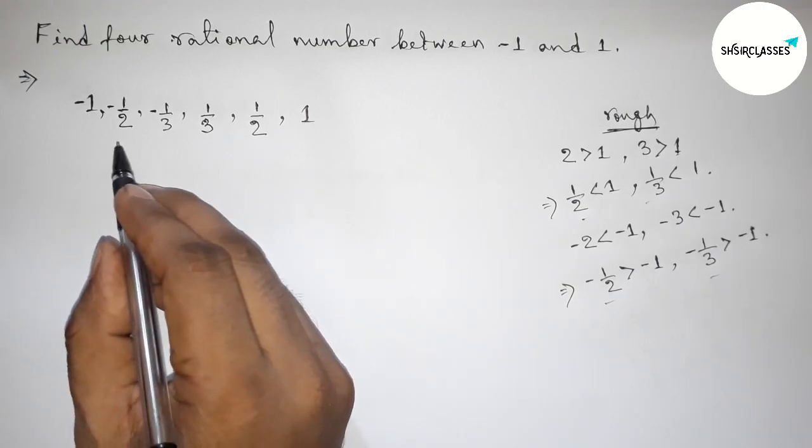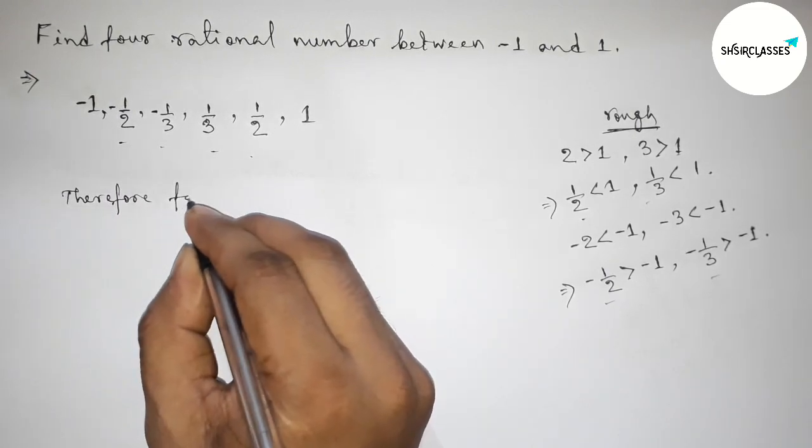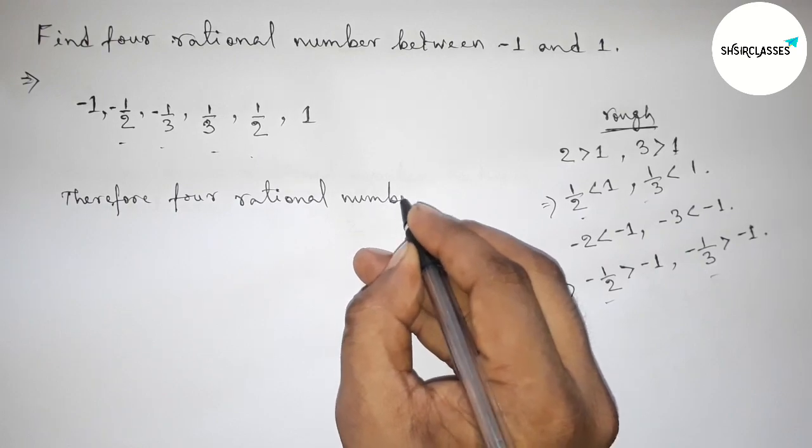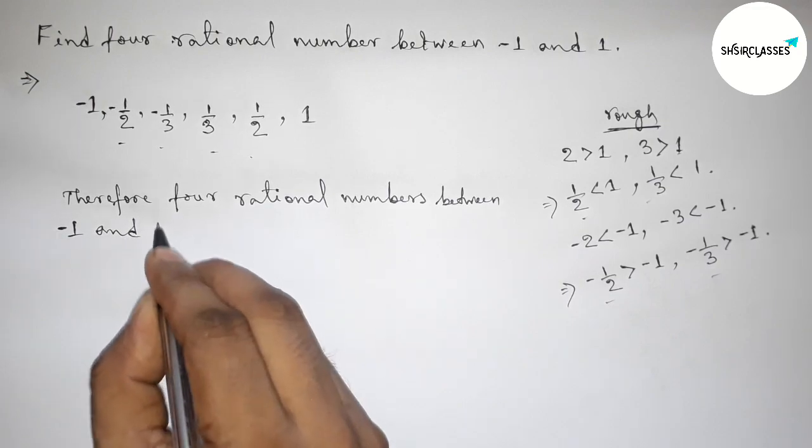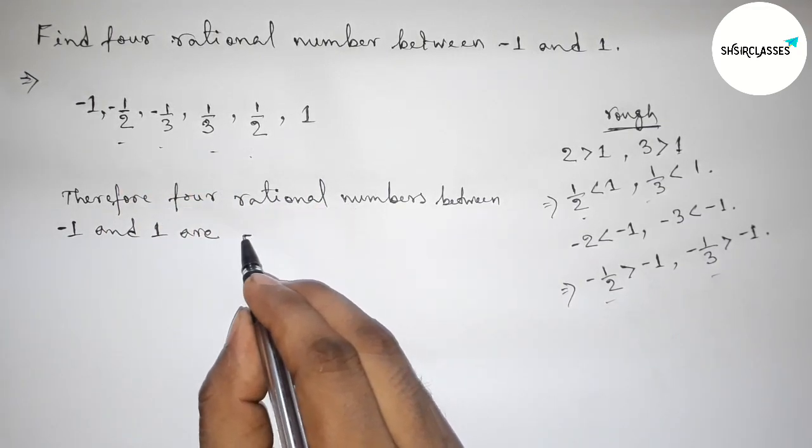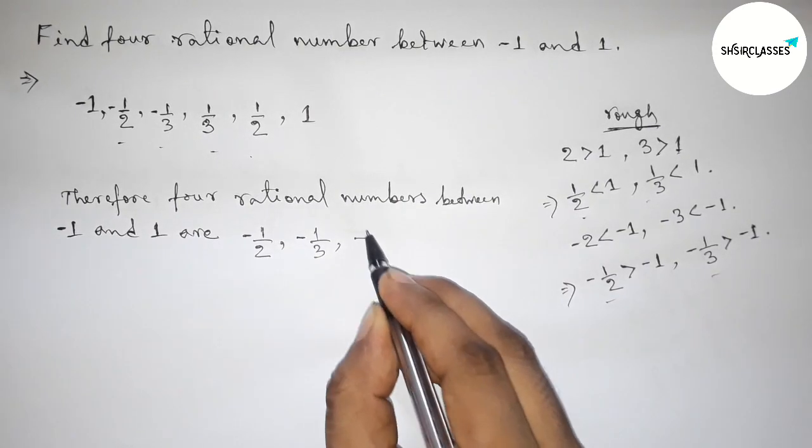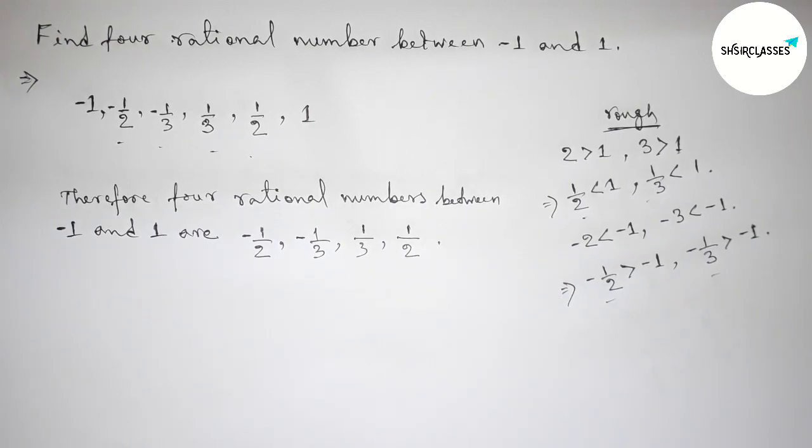So here the question is the final number. So by this way you can find four rational numbers between minus one and one. So that's all.